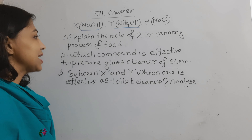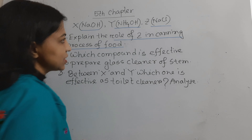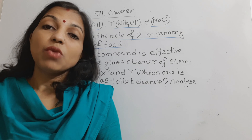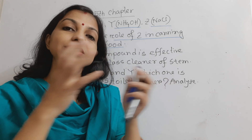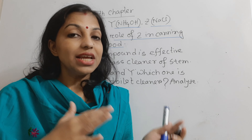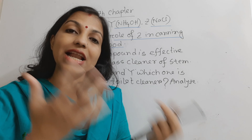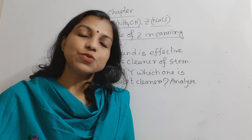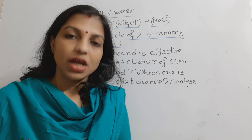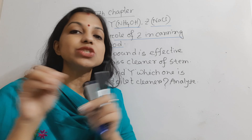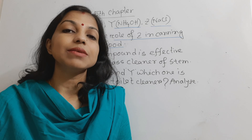Let's start our first question: explain the role of Z in the canning process of food. Here Z is sodium chloride. The modern method of preservation of food is the canning process. In canning, a container is used to preserve food. Before placing food in the container, a preservative is added — a chemical substance which preserves food from microorganisms.